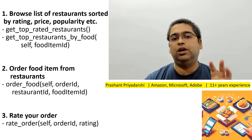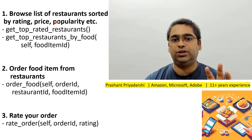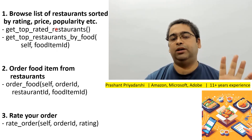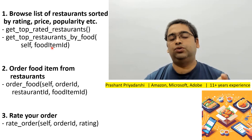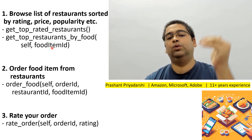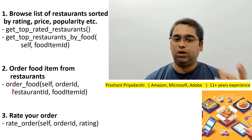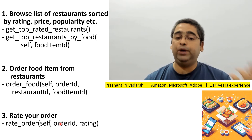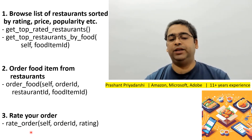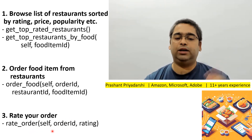Whenever you use a food ordering app you do these things. First, you browse a list of restaurants sorted on different parameters — here we focus on top rated restaurants. You also search for a particular food item and see which restaurants rate it highest. You order food from a particular restaurant, and if you are happy or unhappy you rate the order from 1 to 5, where 5 is the best and 1 is the worst.